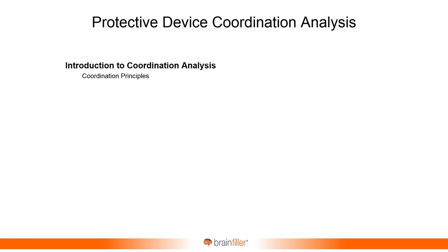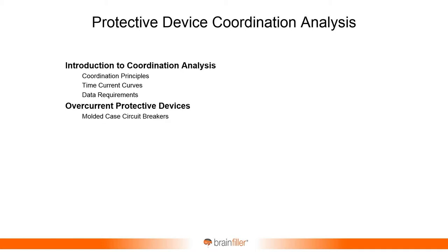In this course we have the introduction, where I'll talk about basic coordination principles. Then I'll introduce what are known as time current curves. From there, we'll look at the data requirements — there's a tremendous amount of data that goes into performing a short circuit study. Then we'll look at the specifics of overcurrent protective devices, including molded case circuit breakers (both adjustable and non-adjustable), fuses, and how to coordinate current limiting fuses.